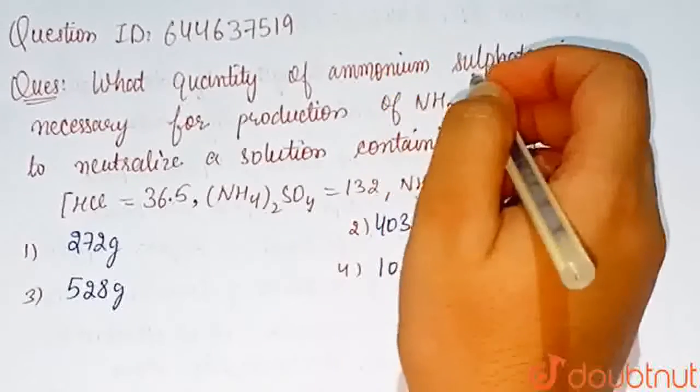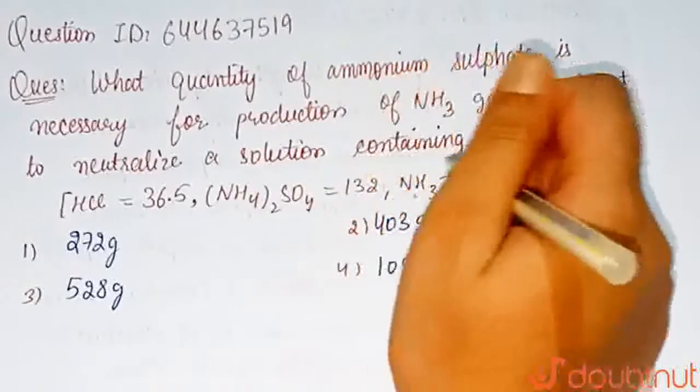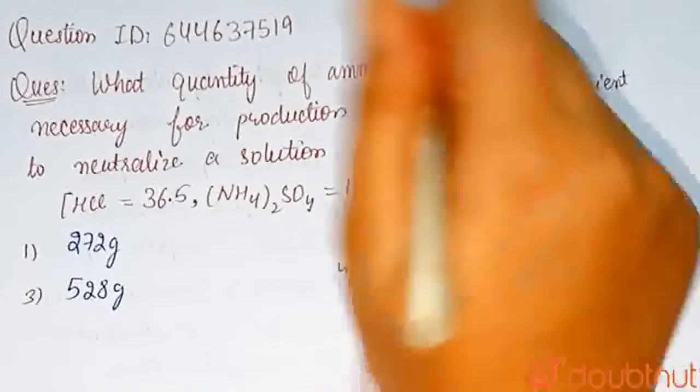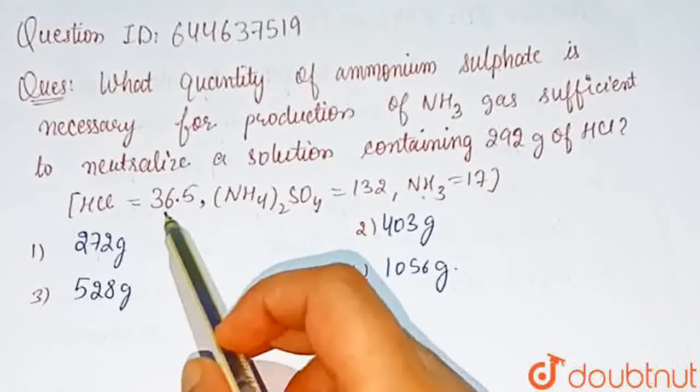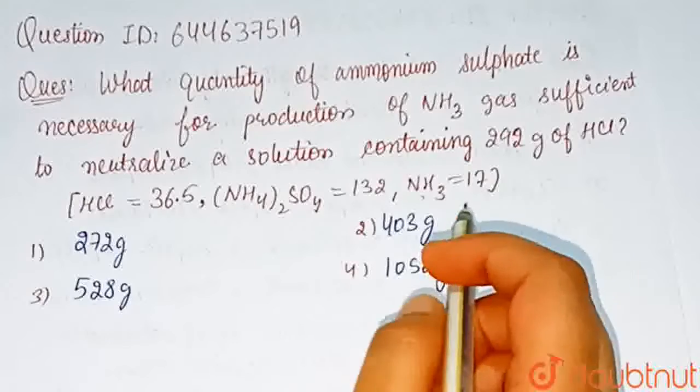Our question is: what quantity of ammonium sulfate is necessary for production of ammonia gas sufficient to neutralize a solution containing 292 grams of HCl? Atomic mass of HCl is 36.5, ammonium sulfate 132, and ammonia equal to 70. First,